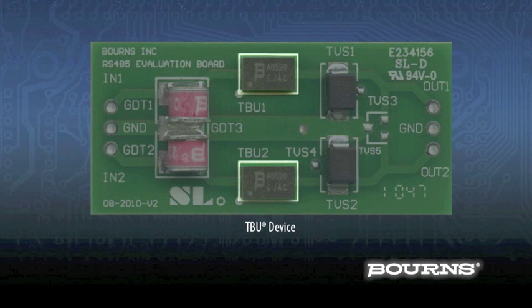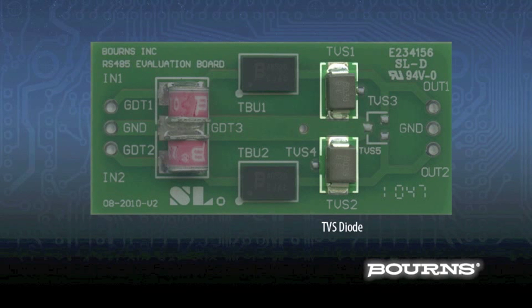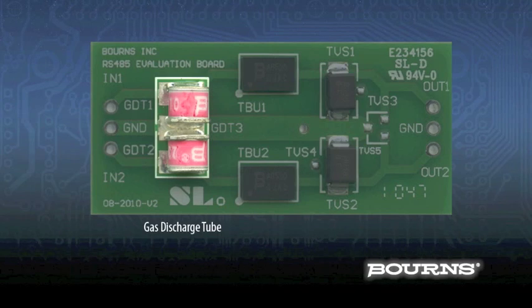TBU, transient blocking unit, which is a resettable high-speed protector. TVS, transient voltage suppressor diode. GDT, gas discharge tube.